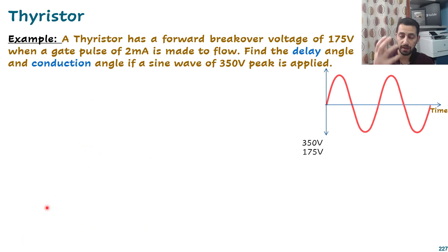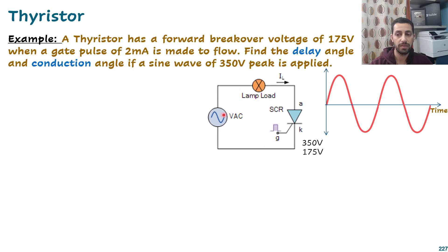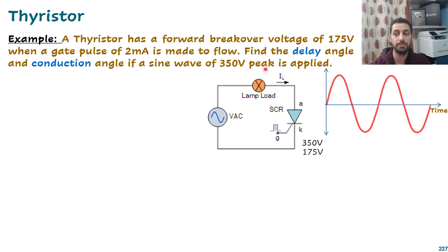Let's work through an example to understand the delay and conduction angle. We have a thyristor with a forward breakover voltage of 175 V when a gate pulse of 2 mA is made to flow. The circuit supplies a sinusoidal waveform to the thyristor. The sinusoidal has a 350 V peak. Find the delay angle and conduction angle.